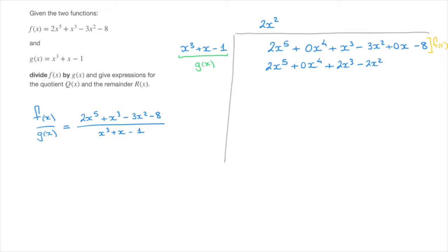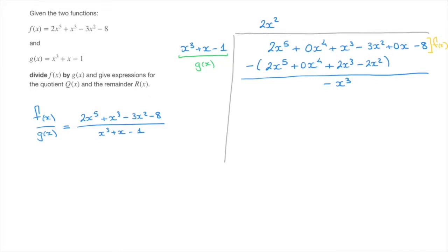We now subtract this entire expression from the top one. 2x⁵ − 2x⁵ = 0. 0x⁴ − 0x⁴ = 0. x³ − 2x³ = −x³. Then −3x² − (−2x²) = −3x² + 2x² = −x². Finally we carry down 0x and −8, giving us +0x − 8. Done.